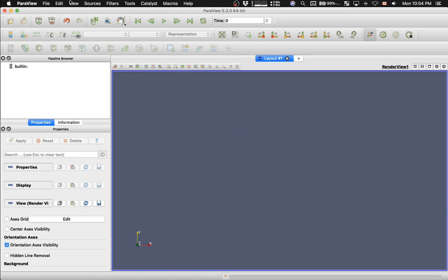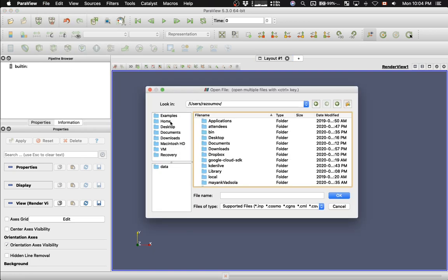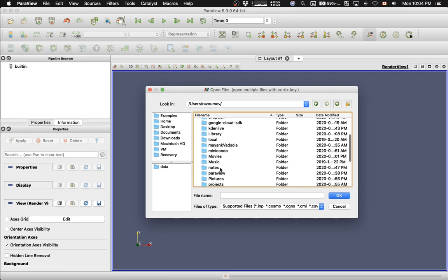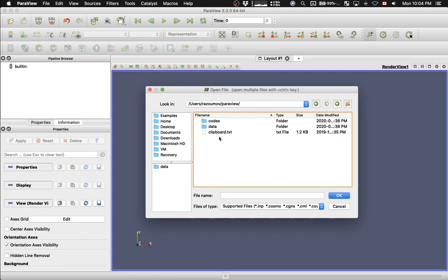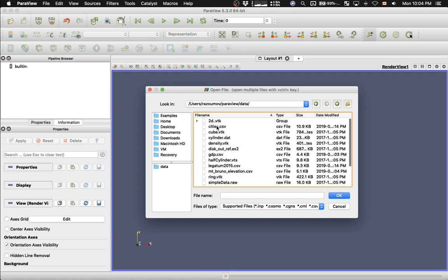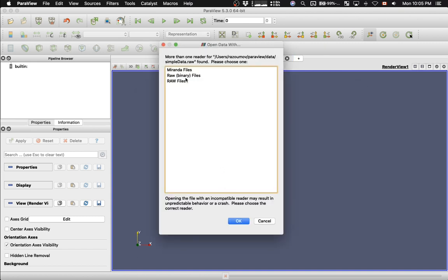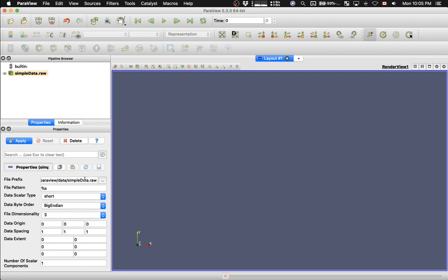And here, I will go to File, Open. In my home directory, I have a subdirectory called ParaView. And in here, I have inside of data, file SimpleData.raw. ParaView looks at the extension of the file, and it makes a guess about the file format. I need to choose raw binary files. And here, before I hit Apply, I need to fill in all these properties. So I have to tell ParaView a little bit more information about the file.